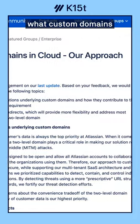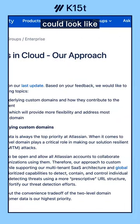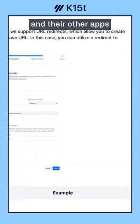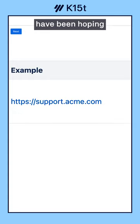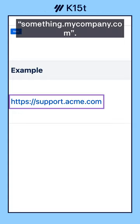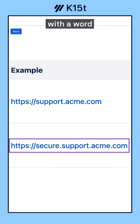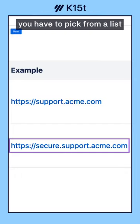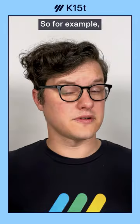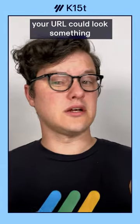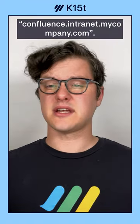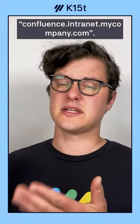In their last update, Atlassian explains what custom domains could look like for Confluence and their other apps. You might have been hoping for something like something.mycompany.com, but for security reasons, Atlassian is giving us this — with a word appended at the beginning. You can't pick what that word is; you have to pick from a list they've provided. So for example, your URL could look something like confluence.internet.mycompany.com.